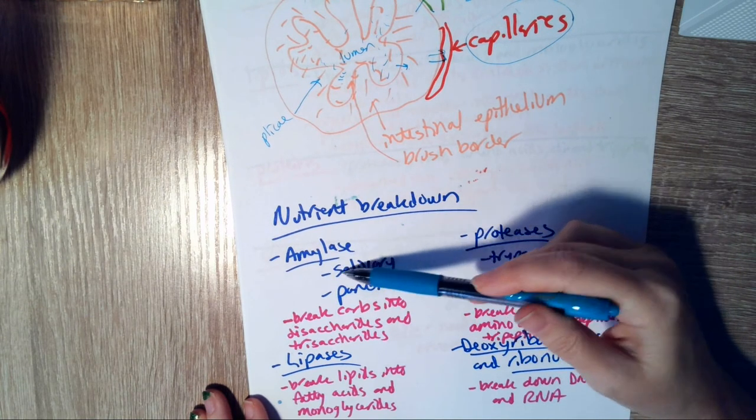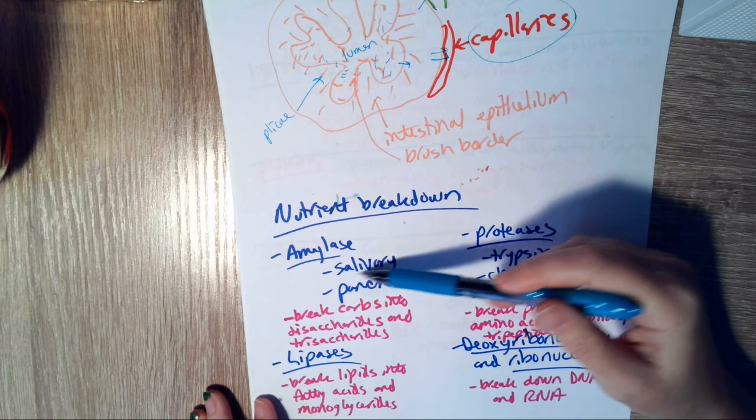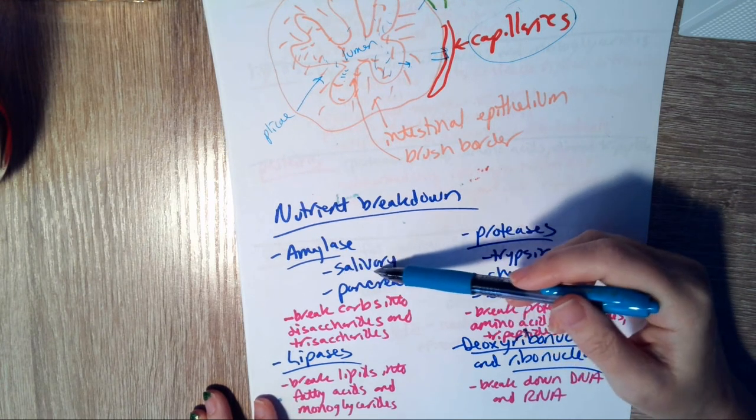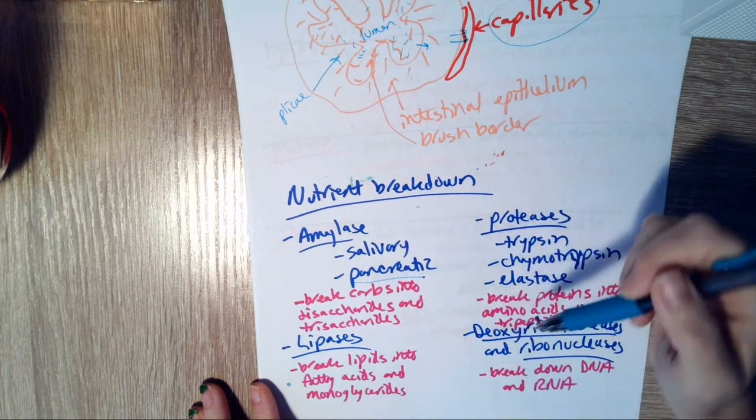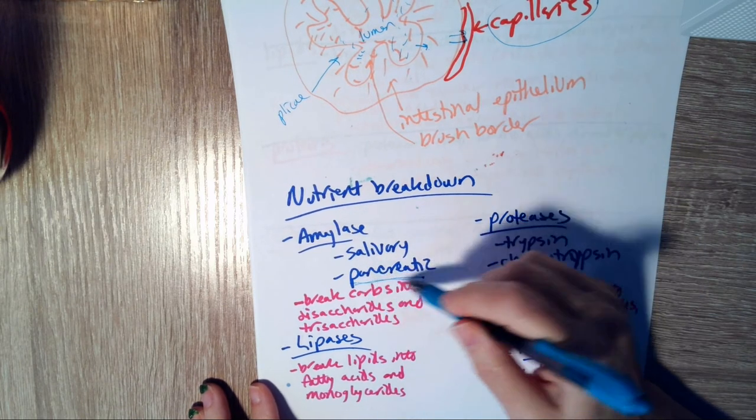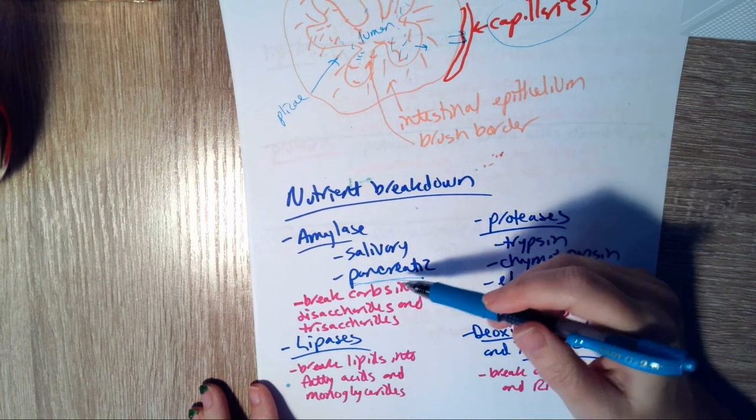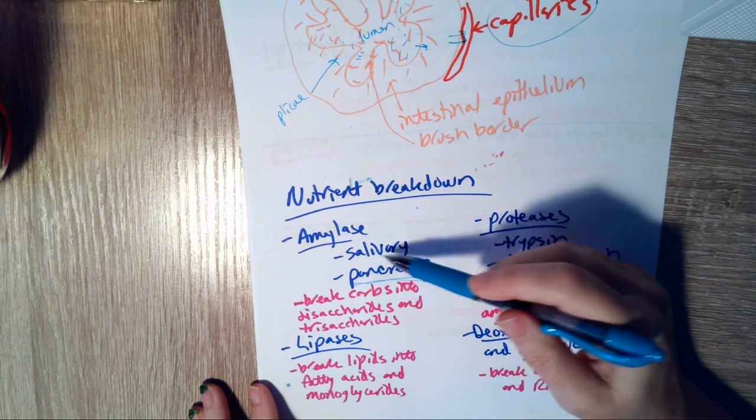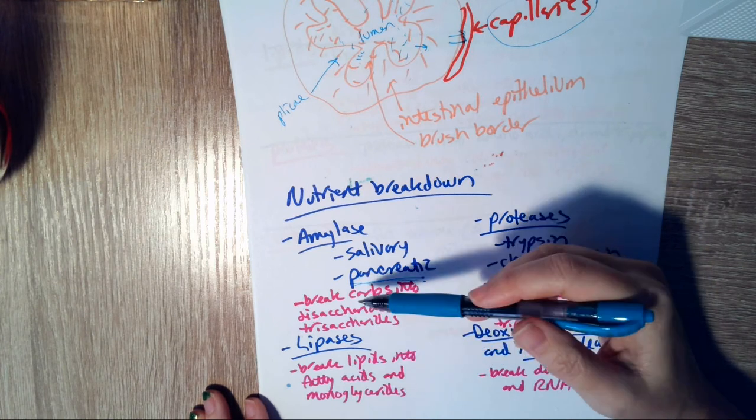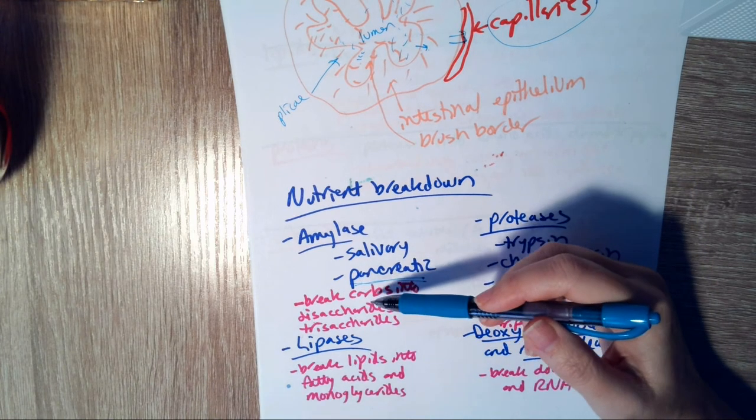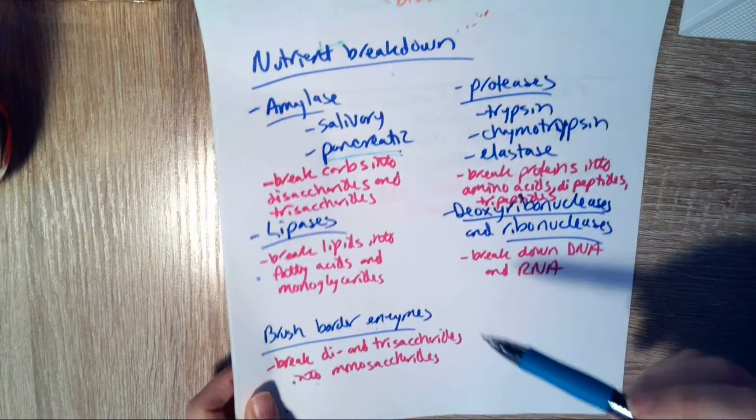There's some amylase in your saliva, so you begin somewhat the breakdown of carbohydrates in the mouth. But you also have pancreatic amylase, and that's where you're going to really do the bulk of your carbohydrate breakdown. So what amylase is doing is breaking the carbohydrates into disaccharides and trisaccharides. That's still too big to get into the cell. So we'll skip down here for a second.